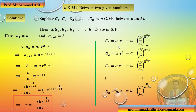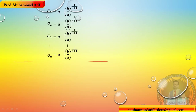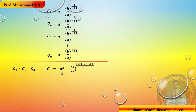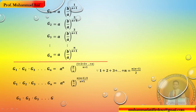یہ ہے n geometric means کا formula۔ اب ان سب کا product لیں: g₁·g₂·...·gₙ میں ایک common A ہے۔ Base same ہو تو powers add ہو جاتی ہیں۔ Numerator میں 1+2+...+n = n(n+1)/2 آئے گا — یہ 6.11 میں prove کریں گے۔ n+1 cancel ہو جائیں گے تو باقی n/2 بچتا ہے۔